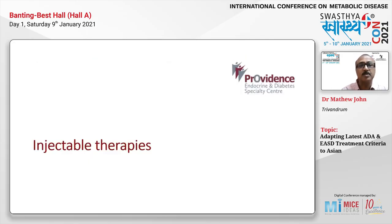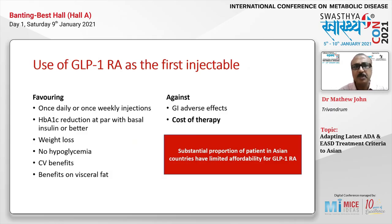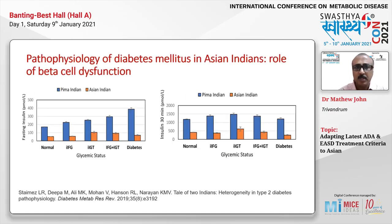On injectable therapies, the ADA guideline recommends considering a GLP-1 receptor agonist as the first injectable in preference to insulin. Factors favoring GLP-1 RAs: once-daily or once-weekly injections, A1C reductions at par with or better than basal insulin, no hypoglycemia, weight loss, cardiovascular benefits, and visceral fat effects. Against: GI adverse effects and cost. Most Asian countries have limited affordability for GLP-1 RAs — still under patent — costing approximately 8,000 to 10,000 rupees per month.